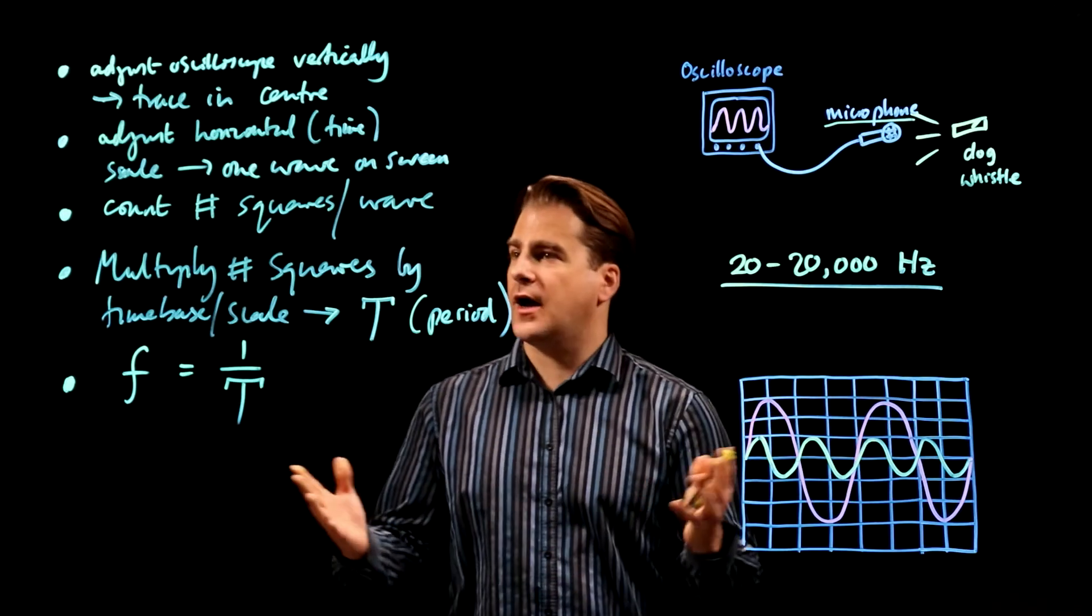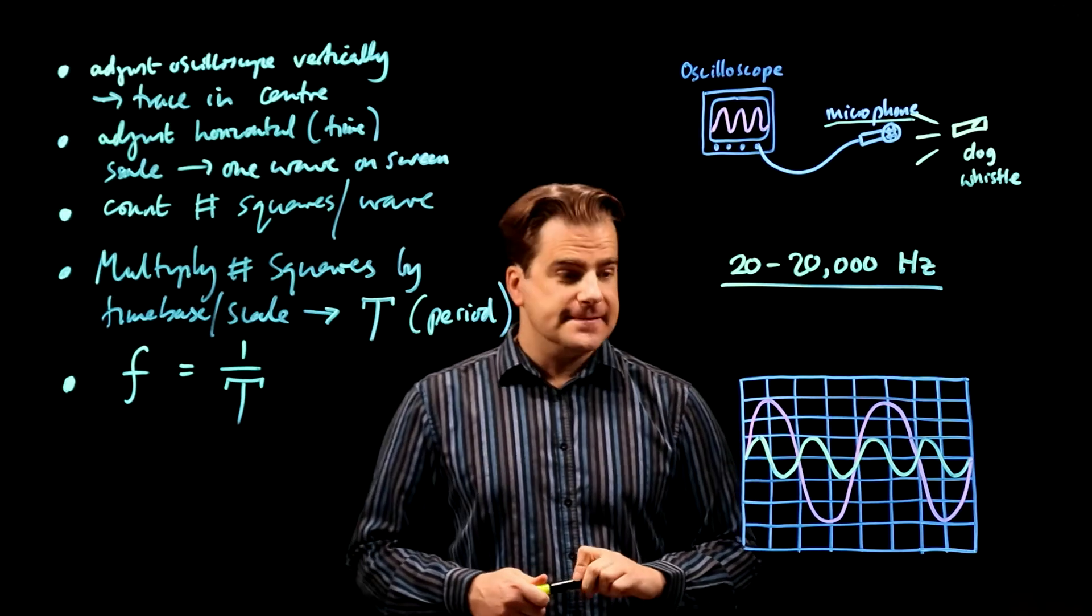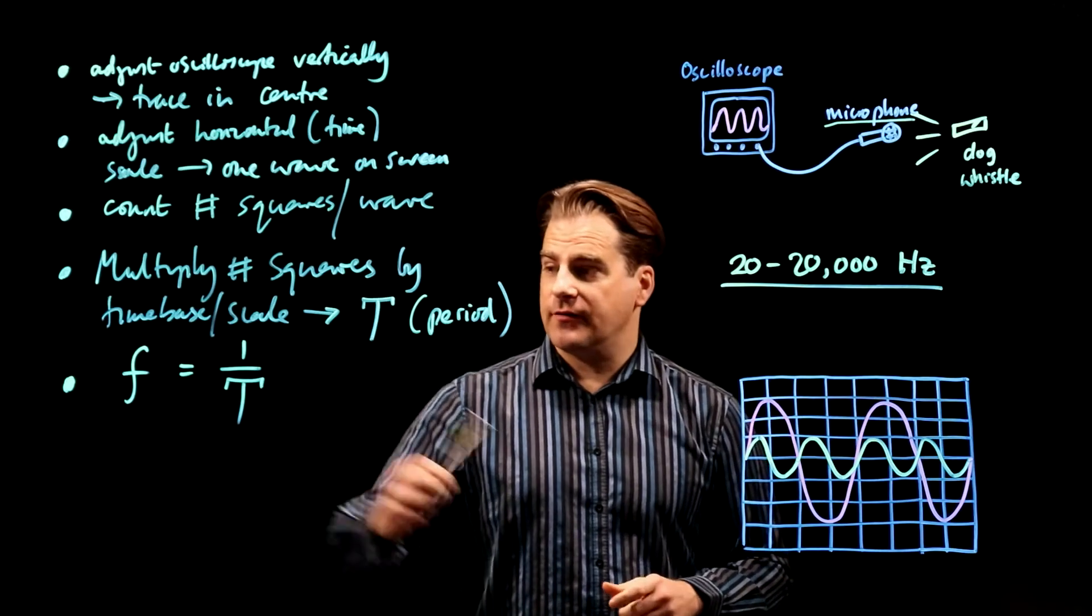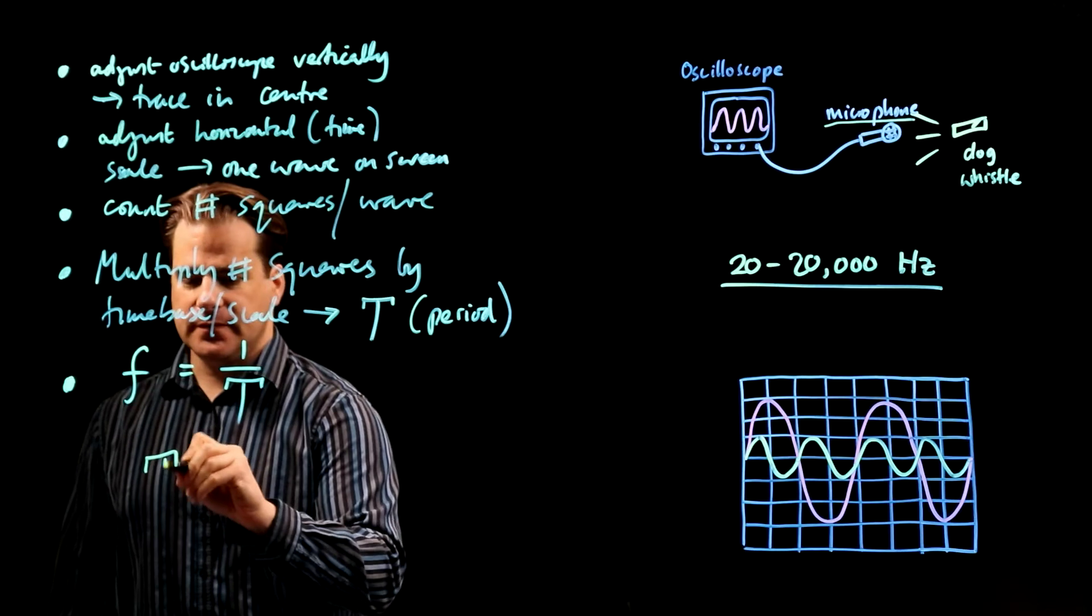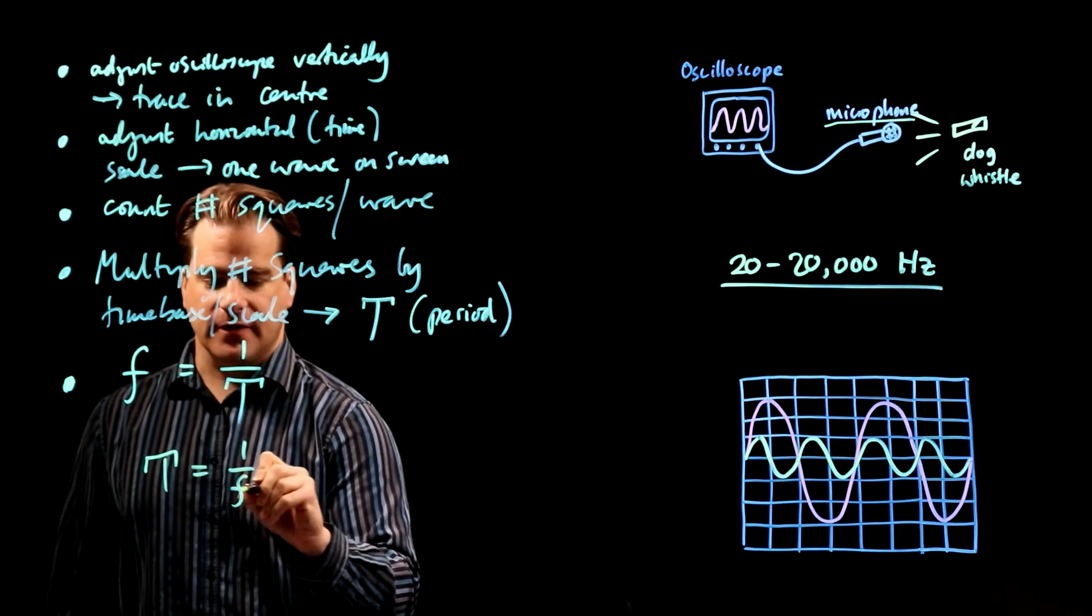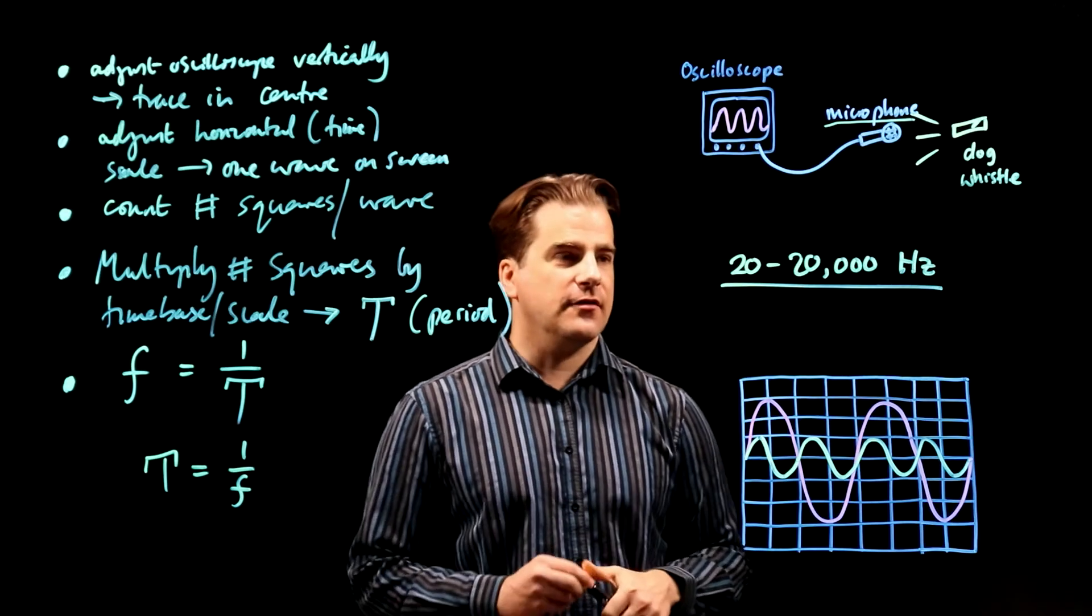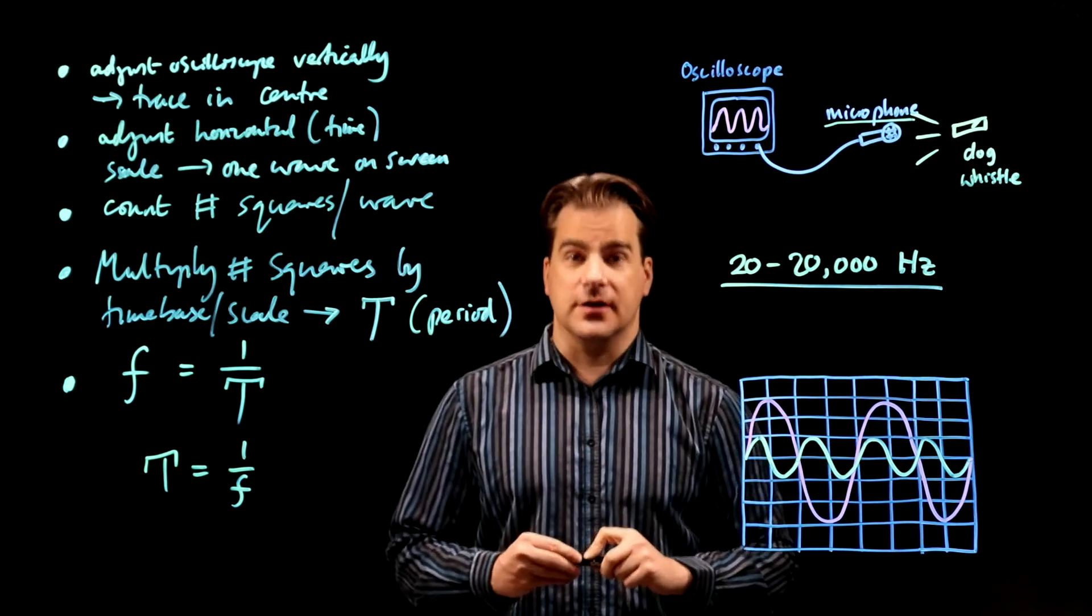So how can we summarize? Make sure you know that frequency is inverse of period. And therefore, of course, period is inverse of frequency. And human hearing is in the range 20 to 20,000 Hertz.